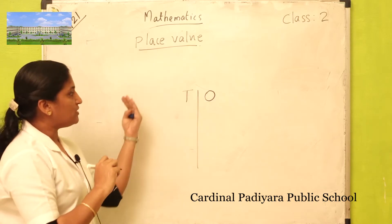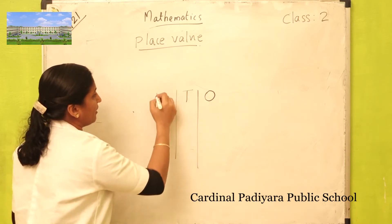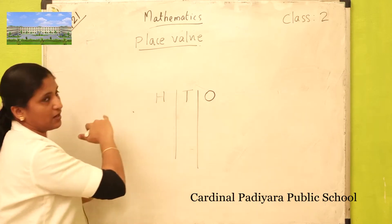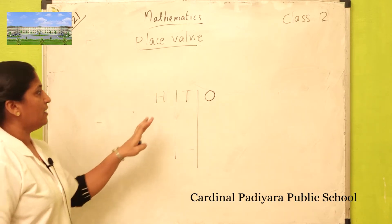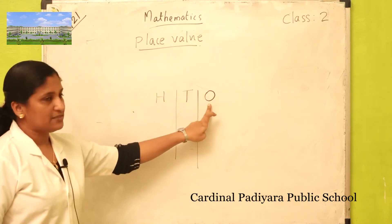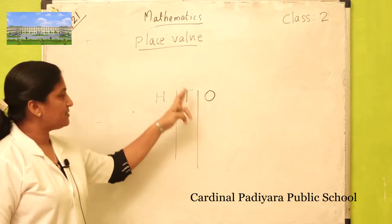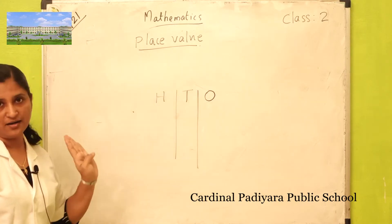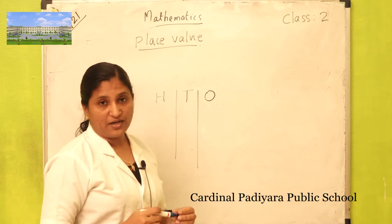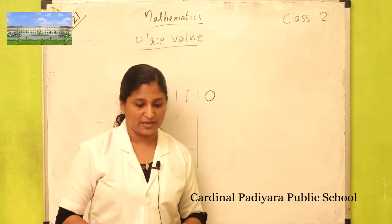Then before tens, which place? Hundreds. Then before hundreds, thousands, etc. So the first place is ones, then tens, then hundreds. Every digit in a number has its own place value.